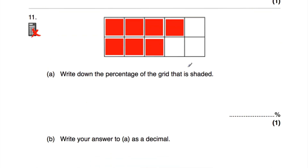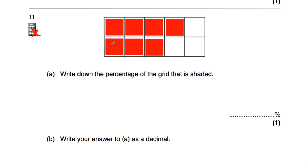Question number eleven: we have a grid with 10 squares. Part A says write down the percentage of the grid that is shaded. There are 7 shaded sections out of 10, so 7 tenths of the grid is shaded. As a percentage, 7 tenths is 70%. Another way to think about it: because we've got 10 equal sections, each one is 10%. Counting up the shaded ones: 10, 20, 30, 40, 50, 60, 70%. So 70% of that grid is shaded.